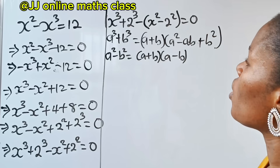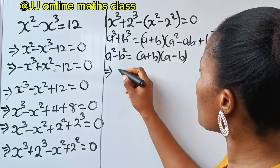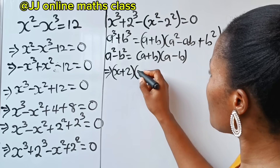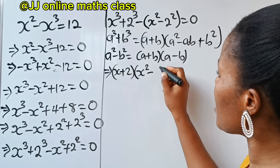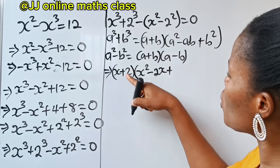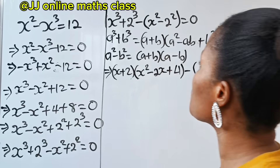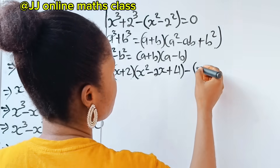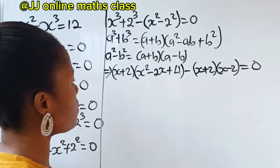Let's write this in this form. It's going to be x plus 2, bracket x squared minus ab, that is 2 times x which is 2x, plus b squared that is 2 squared which is 4. Then minus, this becomes a plus b bracket a minus b, that is x plus 2 multiplied by x minus 2. Everything is equal to 0.